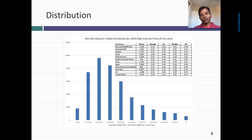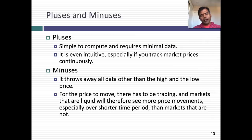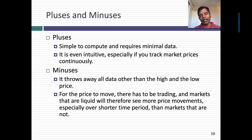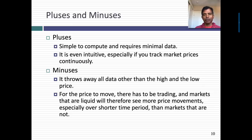Looking at the distribution of the high-low risk measure across the globe, including regional medians and quartiles, there are some interesting and surprising results. The US, Australia, and Canada appear riskier than Africa and the Middle East using this measure. The high-low approach has pluses: it's easy to compute, requires minimal data, and is intuitive. But it has limitations: it throws away all data between the high and low price. A bigger problem — common to all price-based measures — is that this approach depends heavily on how much liquidity there is in the stock. The less trading there is, the less risky your stock will appear. So perhaps the reason the US looks riskier than Africa is because US stocks are more liquid.